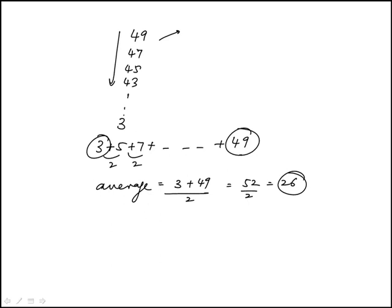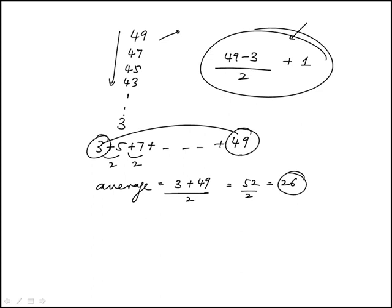The next thing I need to do is count the number of terms. I find that by subtracting the difference between the first and the last, divide that by the spacing plus 1. So that's the general approach to count the number of terms in an arithmetic sequence. So that's 46 over 2 plus 1, that's 23. So there are 24 terms.